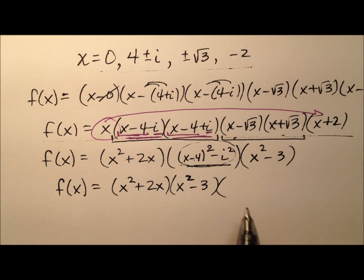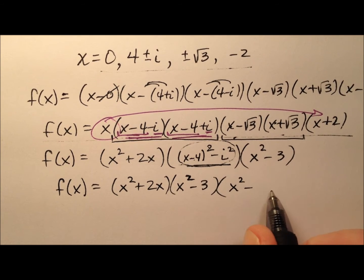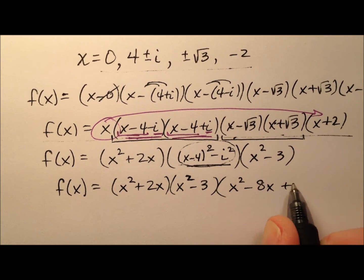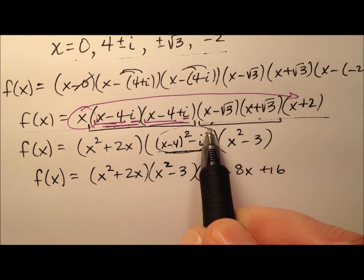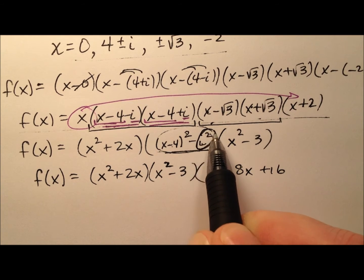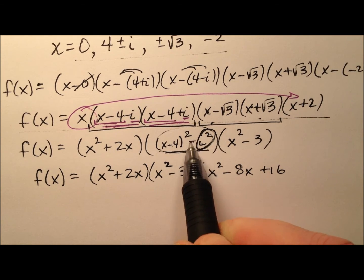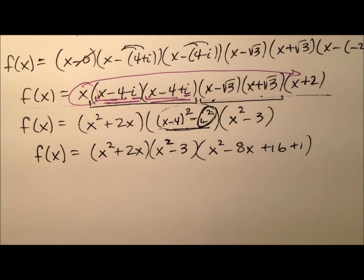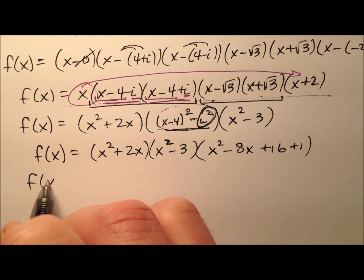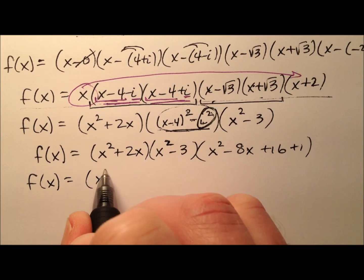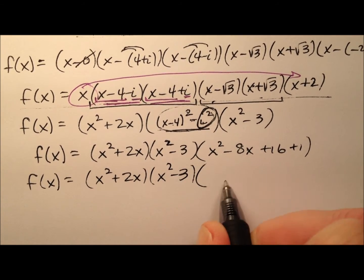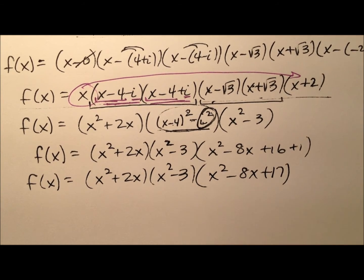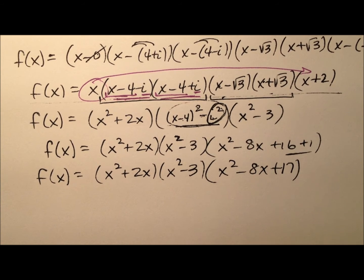So x minus 4 quantity squared will be x squared minus 8x plus 16 and then an i squared is negative 1 but we're subtracting the i squared which is negative 1 so it's really going to be plus 1 right there. So let's rewrite this now. We have the x squared plus 2x times the x squared minus 3 times the x squared minus 8x plus 17 when I go ahead and combine those two constants there at the end.